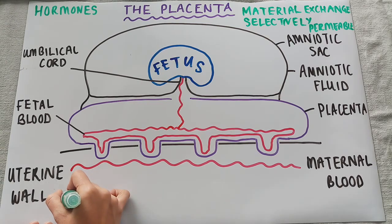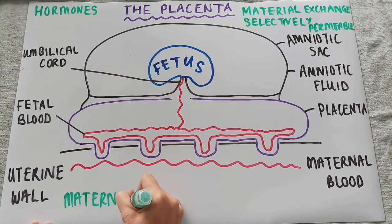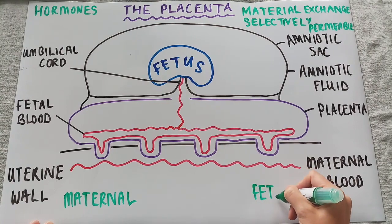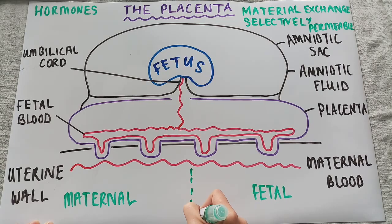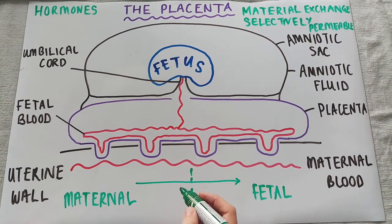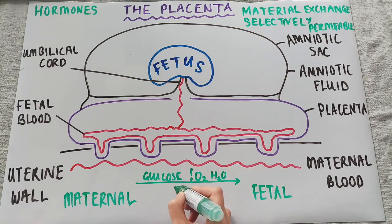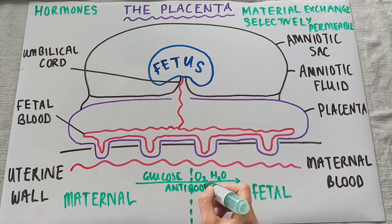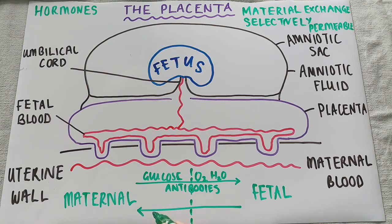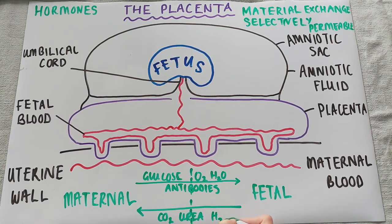We have maternal blood and fetal blood separated by the selectively permeable placental barrier. Things coming from the mother to the fetus include glucose, oxygen, water, and antibodies — very useful things for the fetus. Waste products coming back from the fetus to the maternal blood include carbon dioxide, urea, and some water. Again, the maternal and fetal blood never come into direct contact — there is just an exchange of materials across the placental barrier.